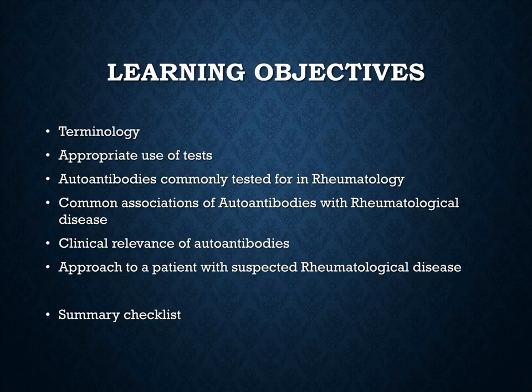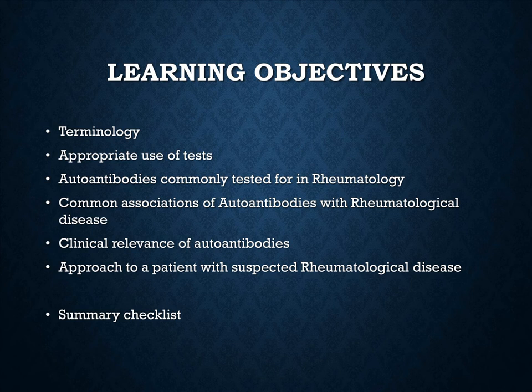The learning objectives are as follows: terminology, appropriate use of tests, autoantibodies commonly tested for in rheumatology, common associations, clinical relevance of autoantibodies, approach to a patient with suspected rheumatological disease, and finally, a summary checklist.